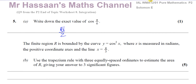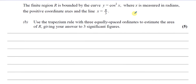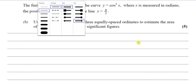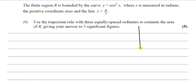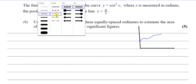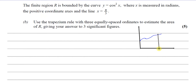Part B says the finite region R is bounded by the curve y equals cosine squared x, where x is measured in radians, the positive coordinate axes, and the line x equals pi over 3. So you've got your y-axis, your x-axis, your curve, and the line x equals pi over 3.